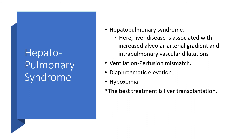Hepatopulmonary syndrome. Here there will be liver disease, particularly liver cirrhosis, associated with increased alveolar-arterial gradient and intrapulmonary vascular dilatations. We'll be faced with ventilation-perfusion mismatch — familiar from pulmonary embolism. There will be diaphragmatic elevation and hypoxemia. There is no shortcut to it; the best treatment is liver transplantation.